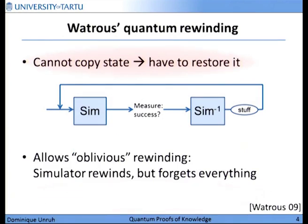This solution was proposed in 2006, or 2009 in the journal version, by John Watrous. The basic idea is that instead of making a copy and going back to that copy — since we can't do that — we have to undo the computation that we made so far. So this is basically the algorithm that Watrous suggests to make a simulator for a zero-knowledge proof. You take some simulator that tries and may either say it worked or it doesn't — so it's like one try where he guesses the challenge.